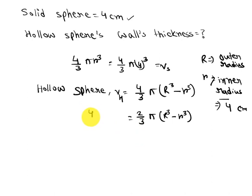This will be equal to 4/3 π r³, because ultimately the volume for both will be the same. These terms will cancel out, giving us 2, so we get